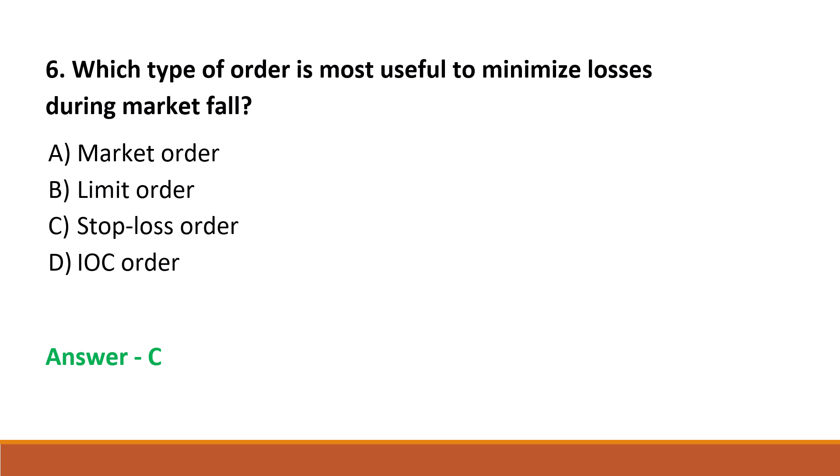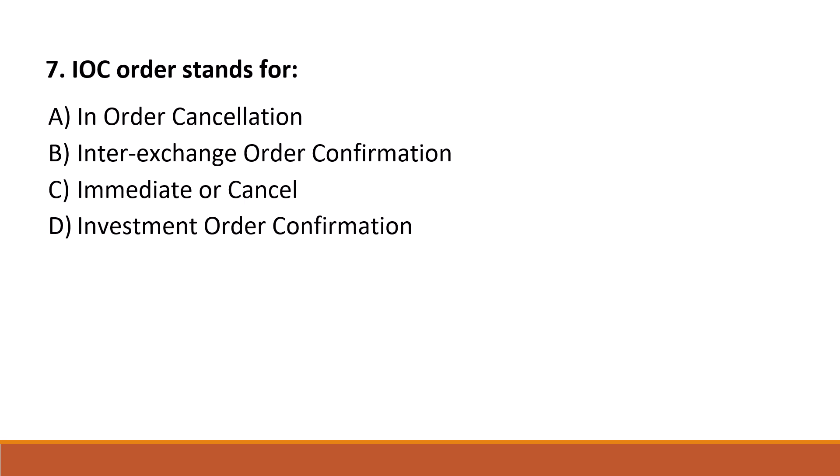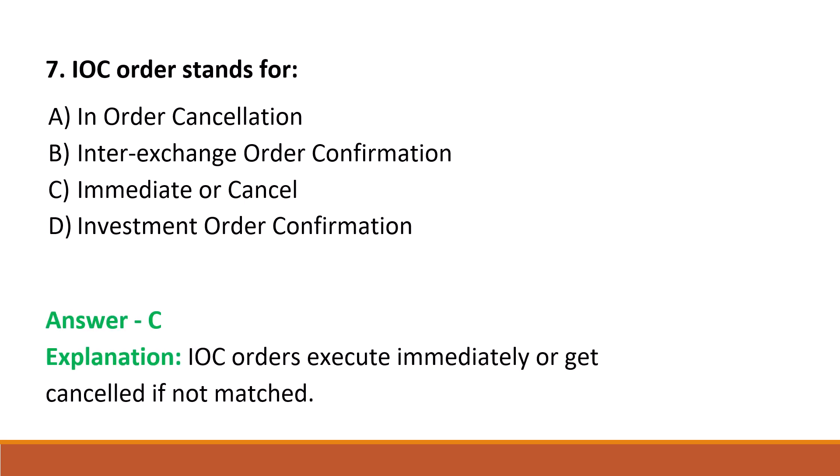Next question: IOC order stands for — Option A: in order cancellation. Option B: inter exchange order confirmation. Option C: immediate or cancel. Option D: investment order confirmation. The correct answer is Option C, immediate or cancel. IOC orders execute immediately or get cancelled if not matched.